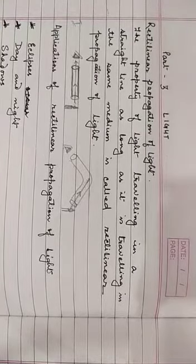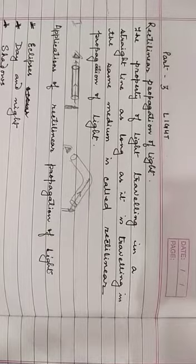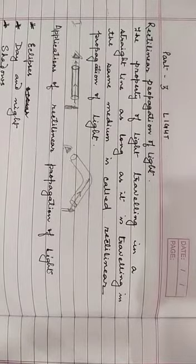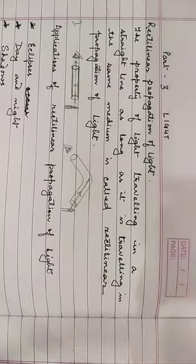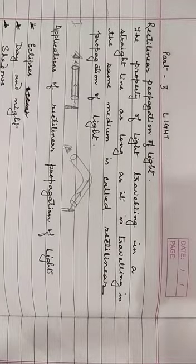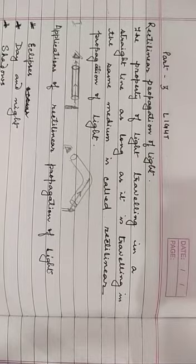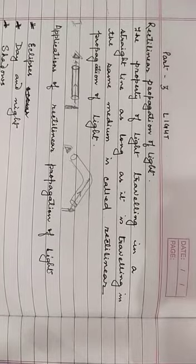Now, what is rectilinear propagation of light? Let us start with a few examples. Have you ever noticed that when you are in a dark room and there is a crack or a hole in the window or the door, or sunlight from outside enters the dark room through the ventilator or the glass pane — have you noticed how the light travels? Light always travels in a straight line.